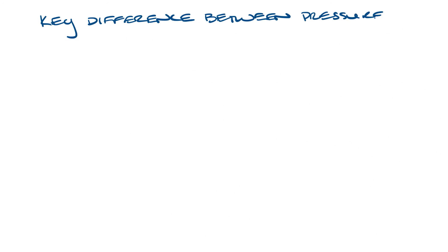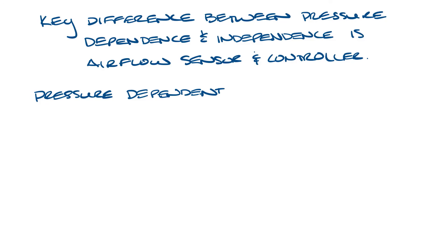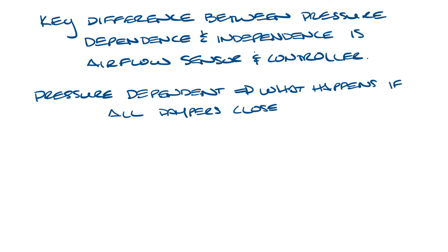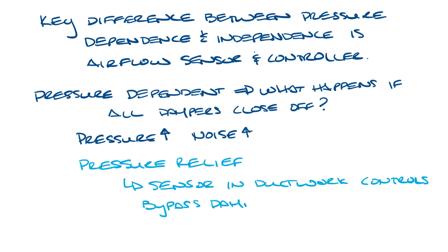Basically, the key difference between a pressure dependent and pressure independent VAV box is the flow sensor and the controller. One final thing about pressure dependence: what happens on the opposite situation — if all the boxes start closing off? Now there could be too much pressure in the system, which can cause a lot of noise and even blow duct work off of diffusers if they're not connected well. In this case, you need to have some sort of pressure relief. In many pressure dependent systems, you'll find a pressure sensor in the duct work that is measuring the duct pressure and either controlling a bypass damper, which will relieve duct pressure, or controlling fan speed, which will slow the fan down to reduce the pressure of the system.